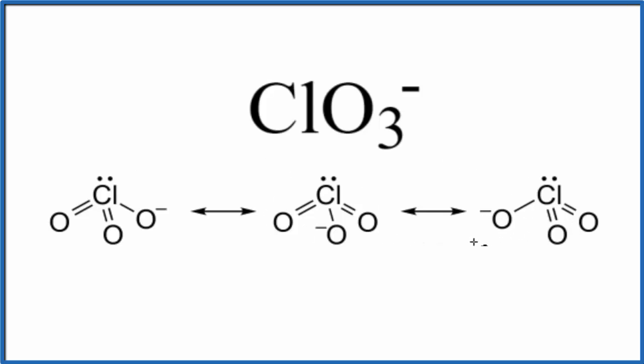Note that I've not drawn lone pairs on each of the oxygen, and I don't have the brackets in here. But this is a good way to represent these resonance structures for ClO3-. And again, there really aren't three separate structures in reality. The actual structure is an average of these three.